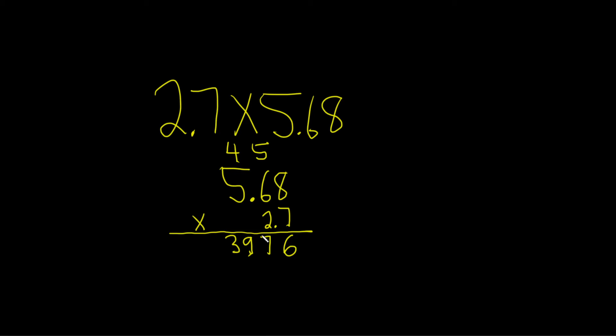Let's check our work. 7 times 8 is 56, wrote down the 6, carried the 5. 7 times 6 is 42, plus 5 is 47, wrote down the 7, carried the 4. 7 times 5 is 35, plus 4 is 39. I'm going to scratch these out because we're going to have new numbers to carry. So now we go to the 2.